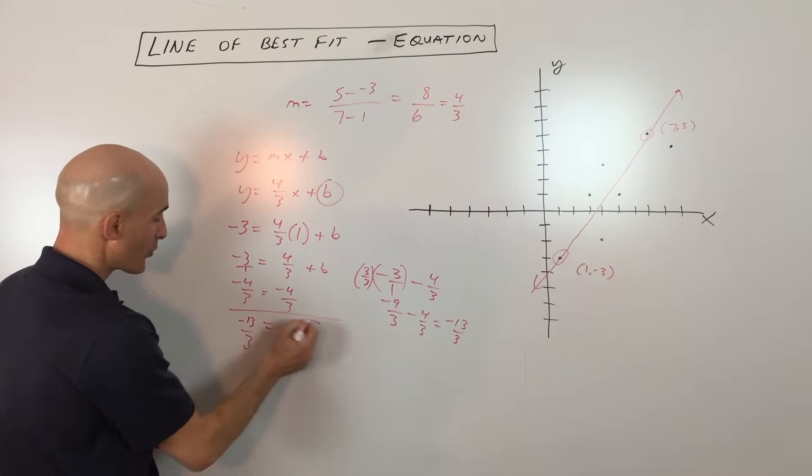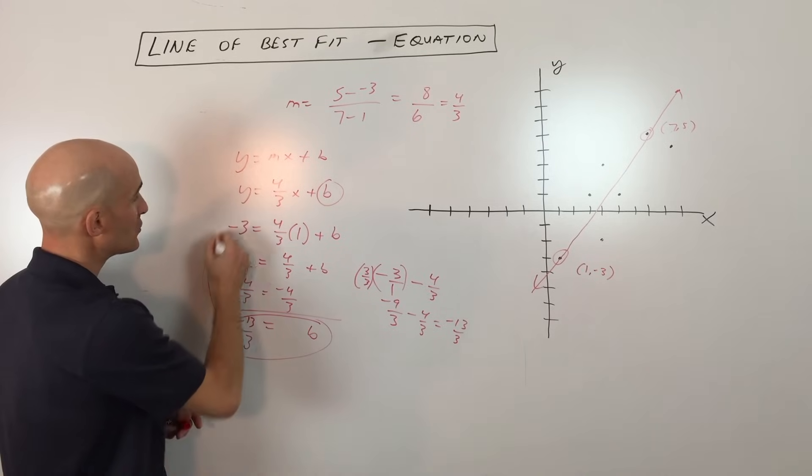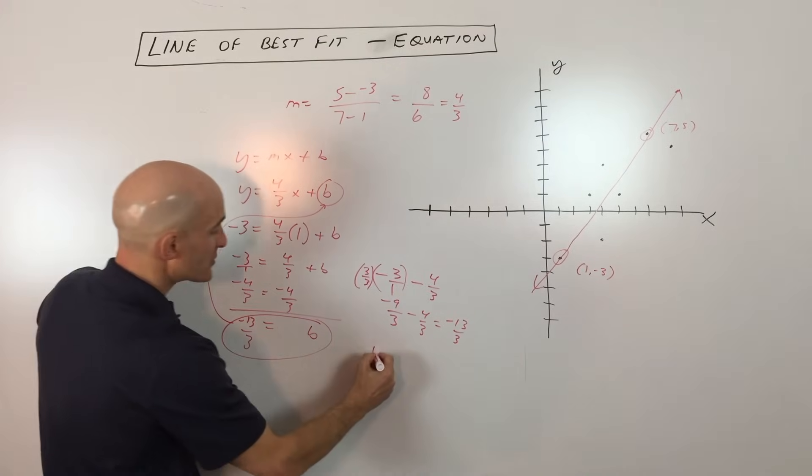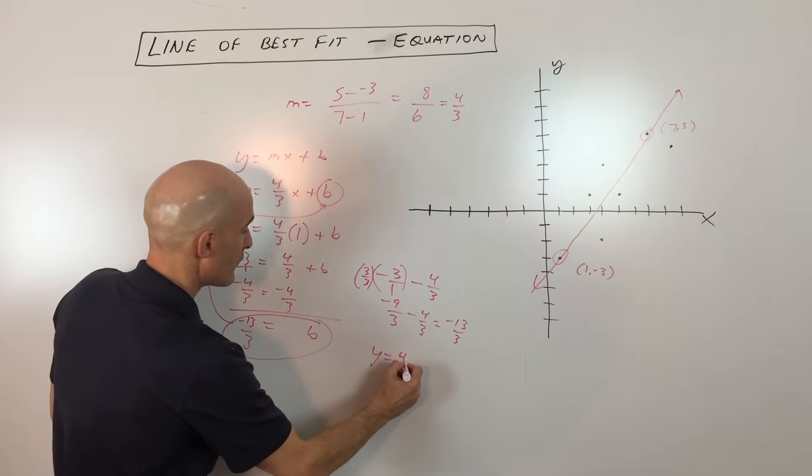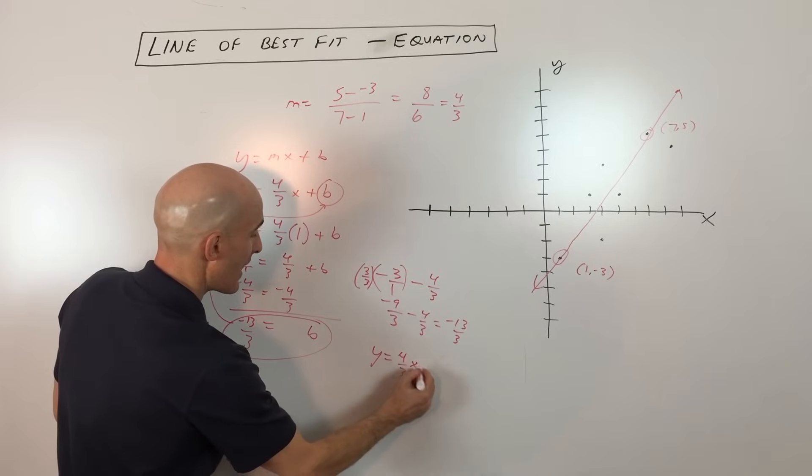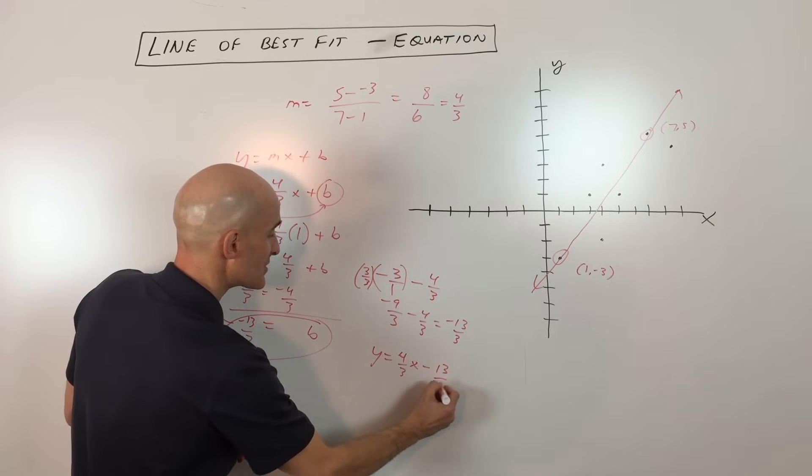So that's our b value. All we're going to do now is we're just going to put that back into our equation right here, so it's going to be y equals four thirds x minus 13 thirds.